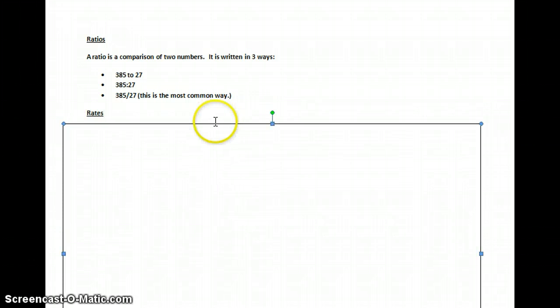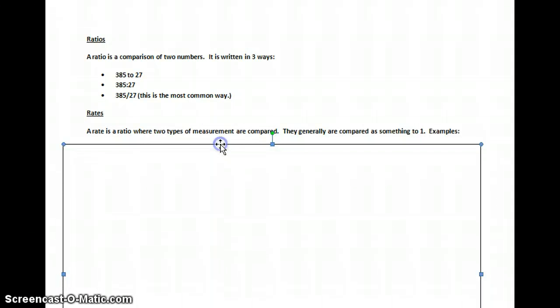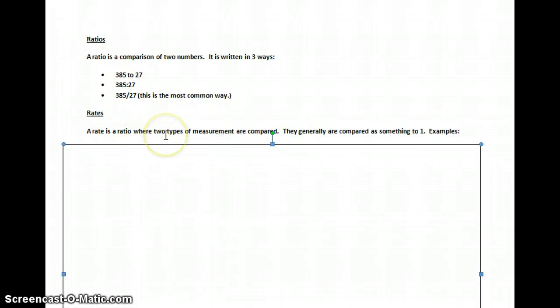Now a ratio is the real basic way, but next we'll talk about rates. A rate is a ratio where two types of measurement are compared. Notice the difference. It's measurement. Up here you had just numbers, here you're going to have measurement, and they sometimes can be compared to one.